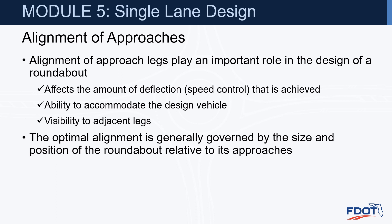Alignment of approach legs plays an important role in the design of a roundabout because they affect the amount of deflection or speed control that can be achieved. It provides the ability to accommodate the design vehicle and visibility to adjacent legs. The optimal alignment is generally governed by the size and position of the roundabout relative to its approaches.